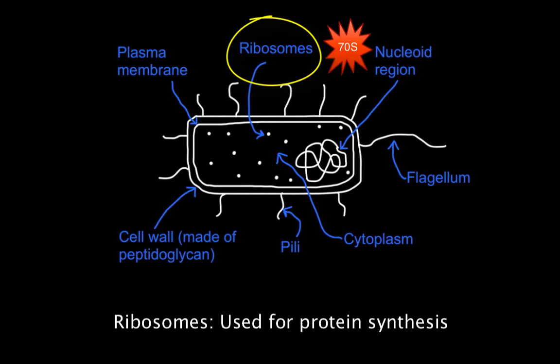Important to know that these ribosomes are 70S, and the IB particularly wants you to know this. In eukaryotes it's 80S and in prokaryotes it's 70S.